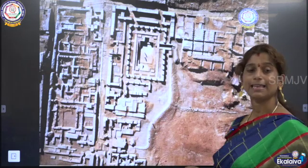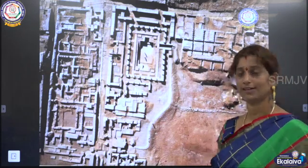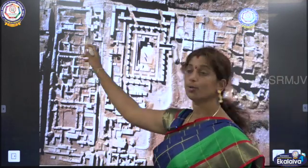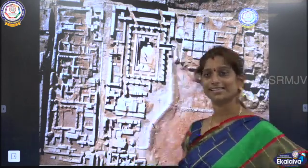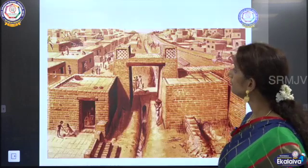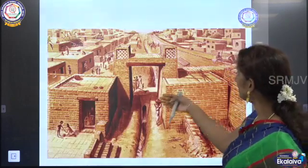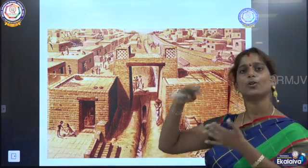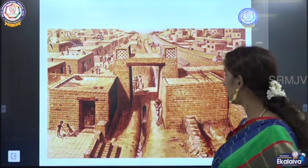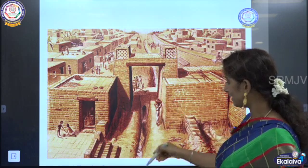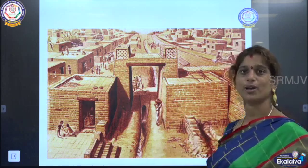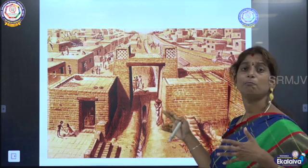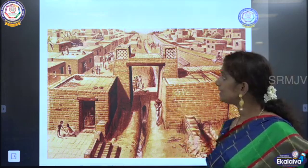Here you can see the site of Harappan civilization. You can see the road going straight, cutting each other at right angles. Another example: you can see people sitting on the terrace, which means the houses had one or two floors — multiple floors were there. You could see a path — that is the drainage system. It was a very well planned city.